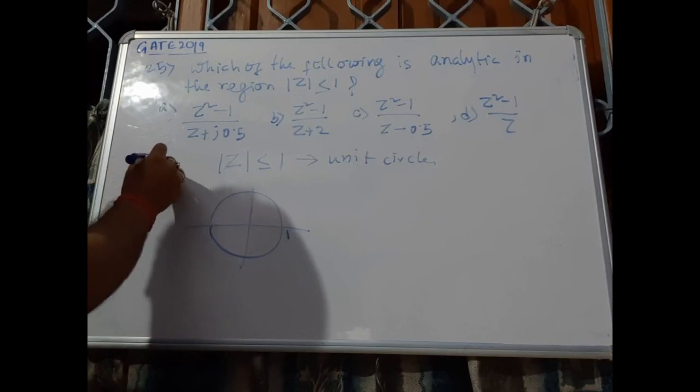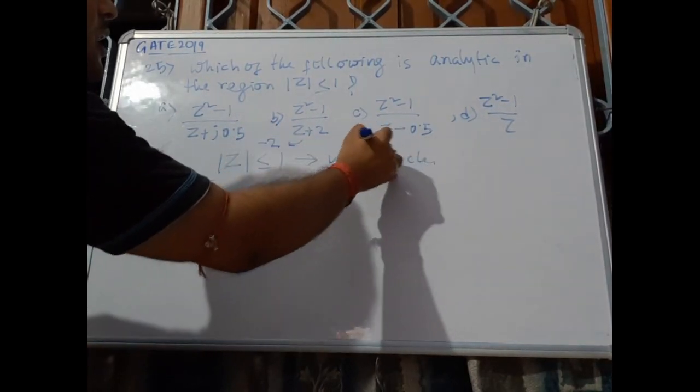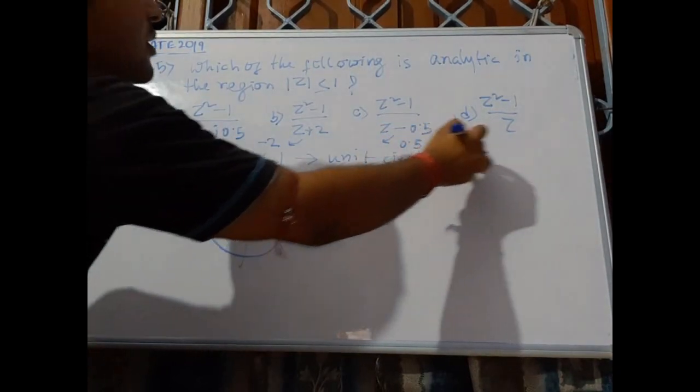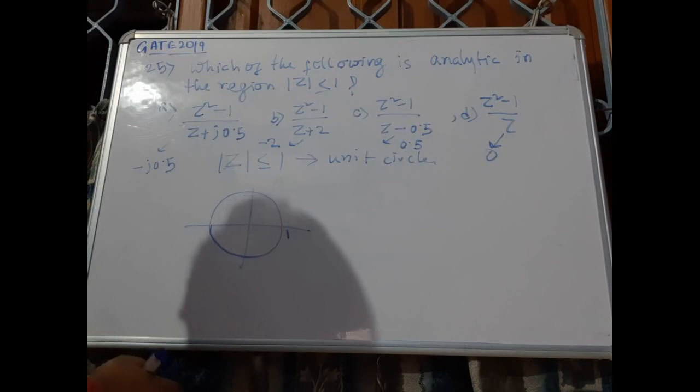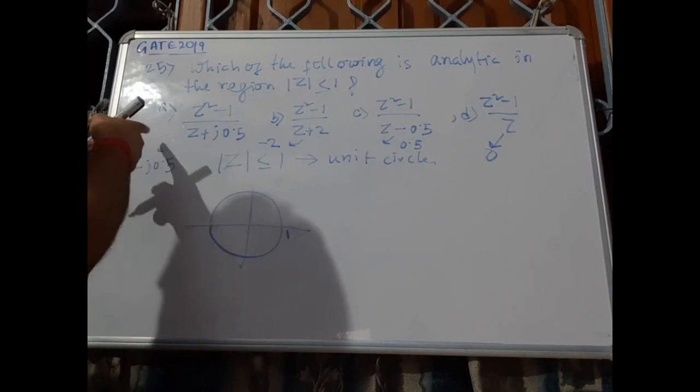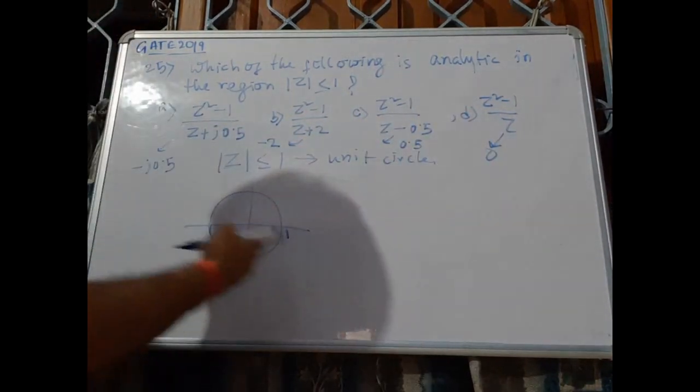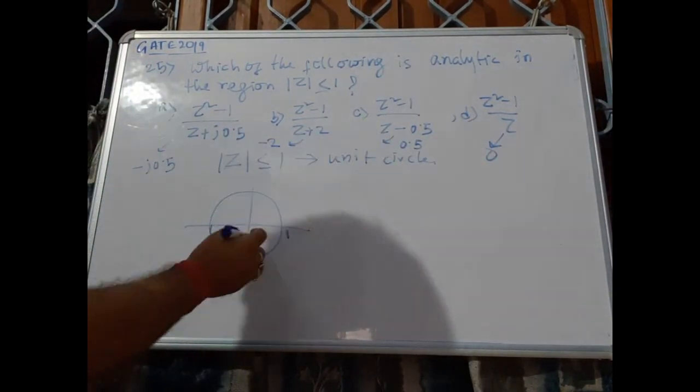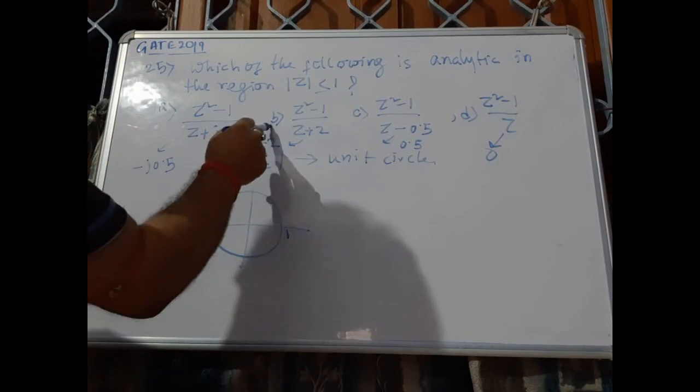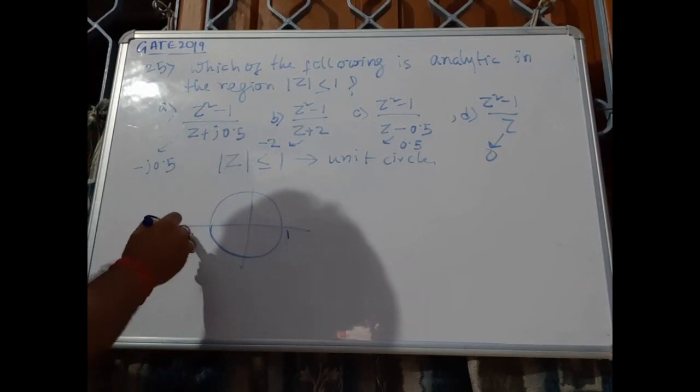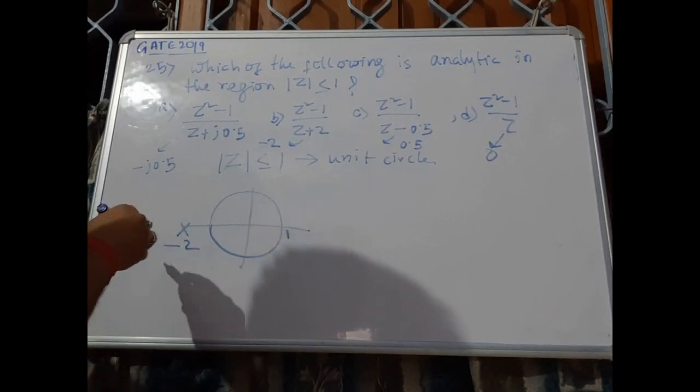At -j0.5, this has singular point at -2, this has 0.5, and this has it at 0. From the options we can see that in options A, C, and D, the singular points are all inside the unit circle. Option B has the singular point at -2, which is outside of the unit circle.